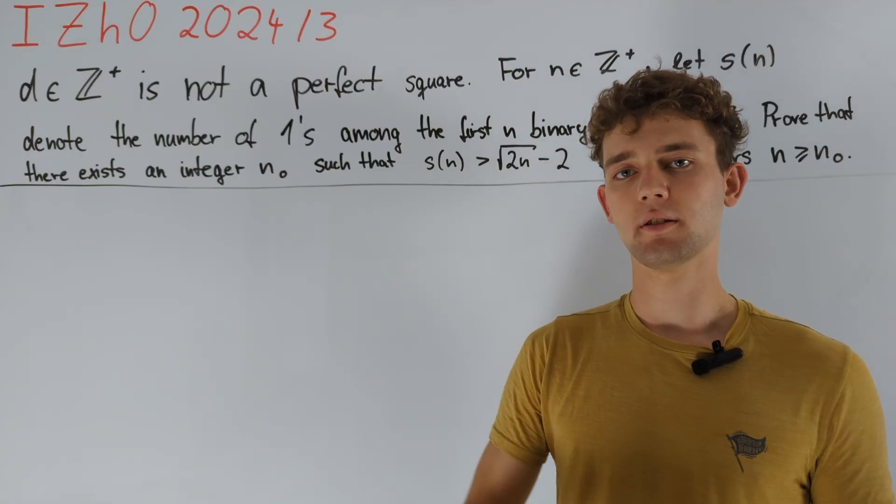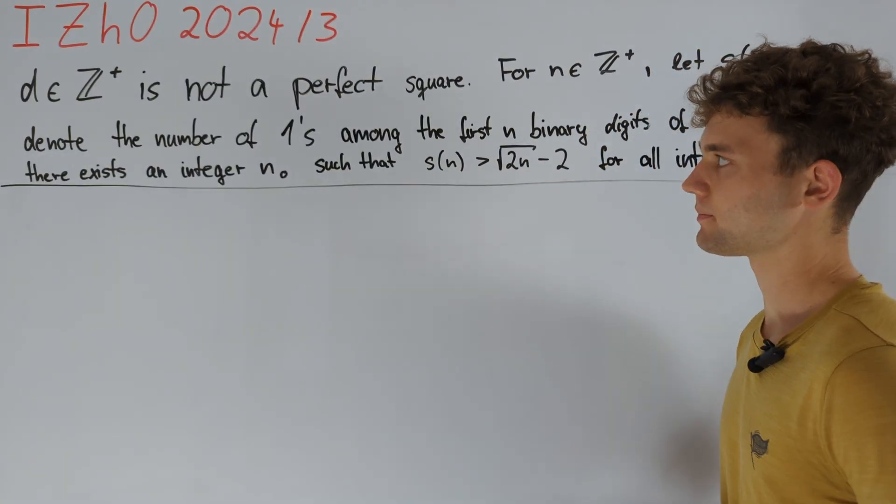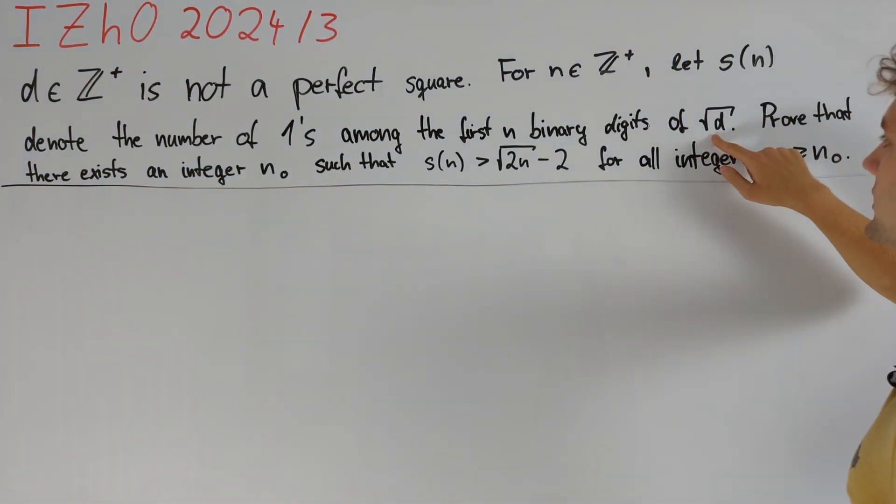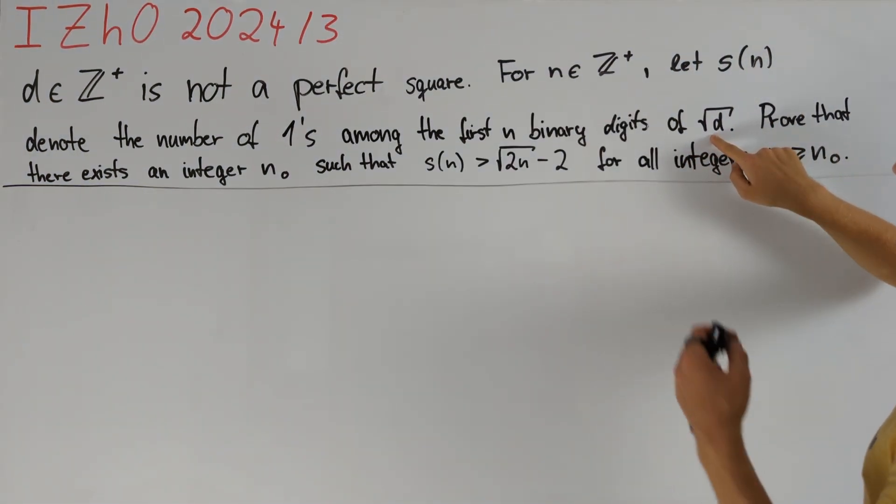The problem statement gives a good idea on how to start with this problem. Namely, if we square the square root of d we get d again, which is an integer.